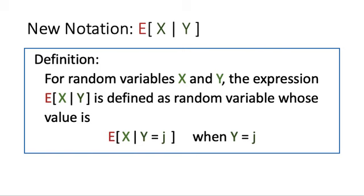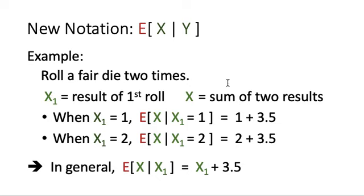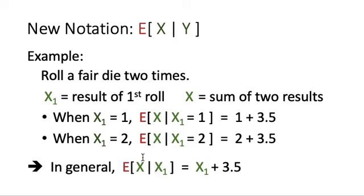Let's take a look at the following example, which we have seen before. Suppose we are rolling a fair die two times. We let X1 be the result of the first roll and X be the sum of the two results. When X1 equals 1, the expected total sum given X1 equals 1 is 1 plus 3.5. When X1 equals 2, the expected value of X given X1 equals 2 is 2 plus 3.5. In general, E[X | X1] = X1 + 3.5. This expected value is a function of X1, so it is a random variable.